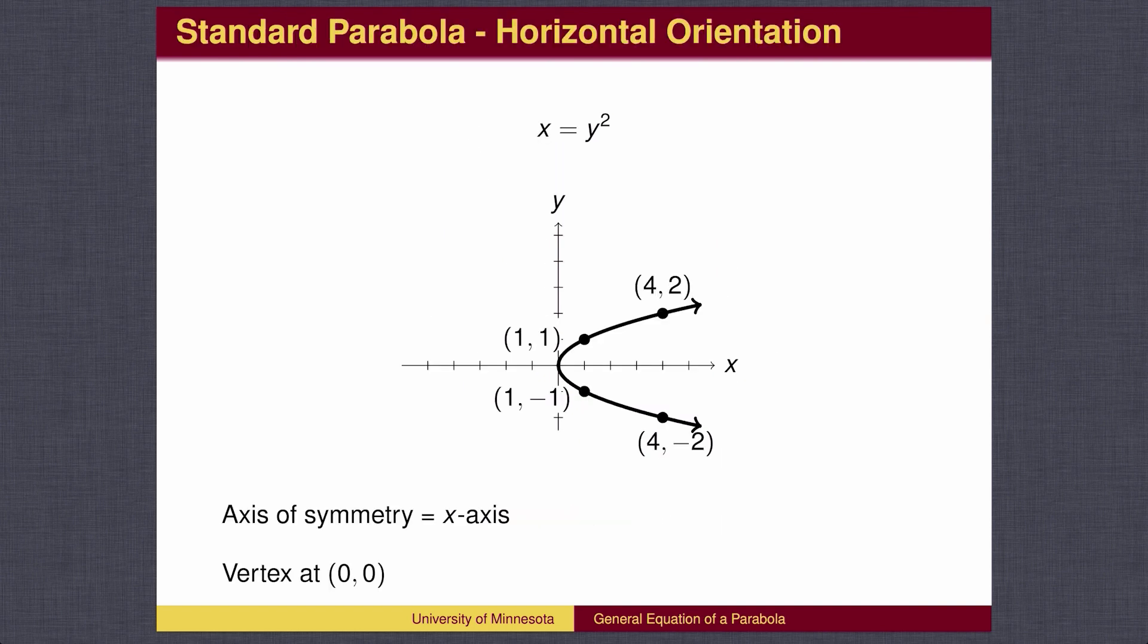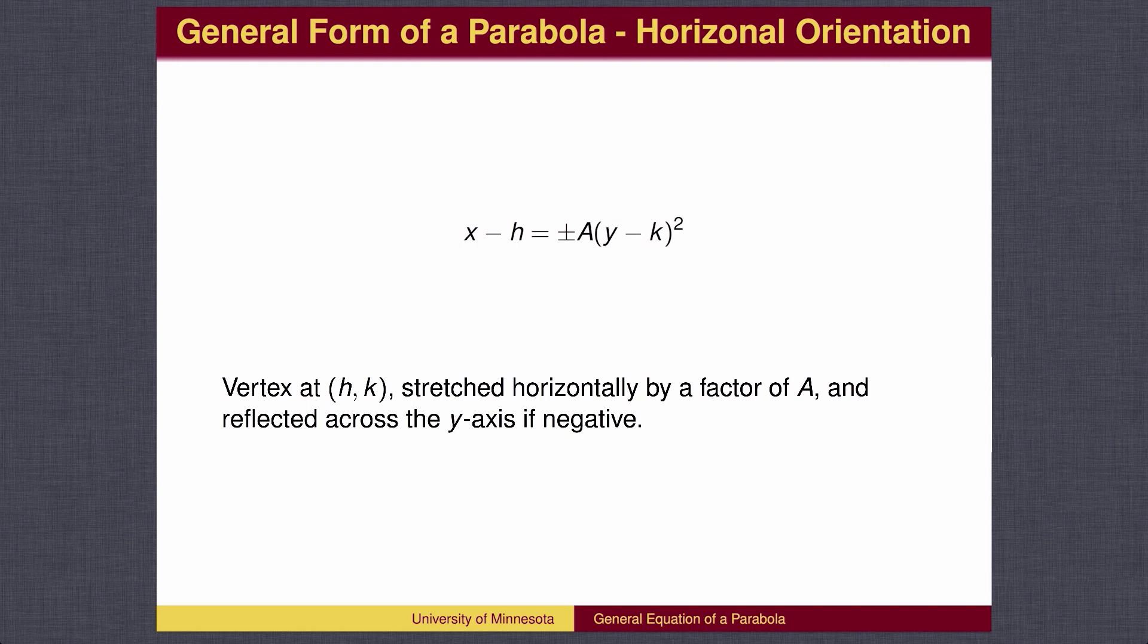If we change the roles of x and y, we get a parabola which is pointed to the right, symmetric across the x-axis. The general form is similar. The h shifts the parabola in the x direction, and the k shifts the graph in the y direction.